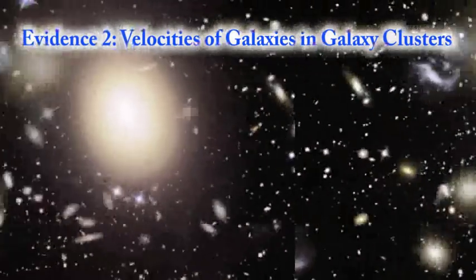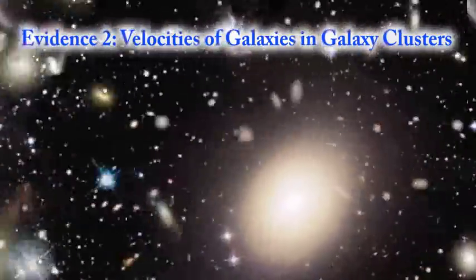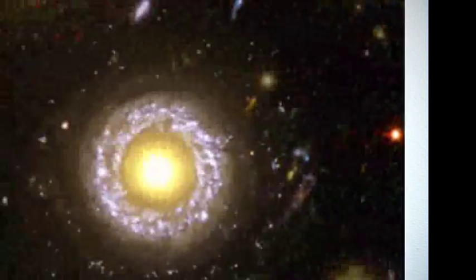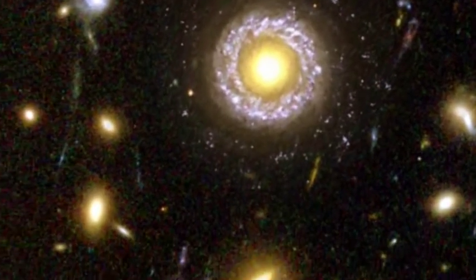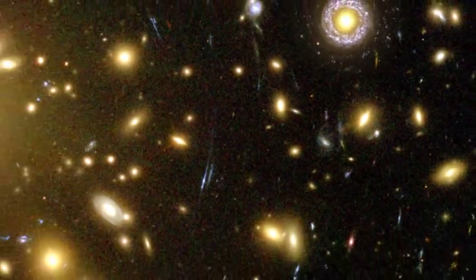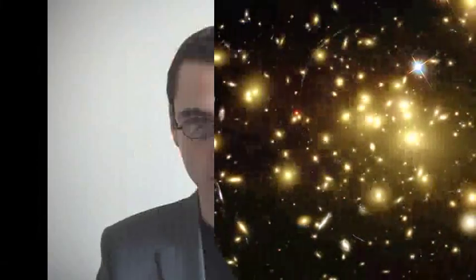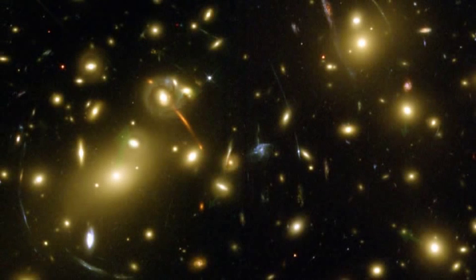The second piece of evidence for dark matter comes from the motion of galaxies in galaxy clusters. Galaxies are collections of stars moving around a common center, and occasionally we find such galaxies packed together in clusters, moving around each other in no particular pattern. We assume that the same laws of motion apply, and so the velocity of the galaxies in such clusters would still depend on the amount of matter inside the cluster.